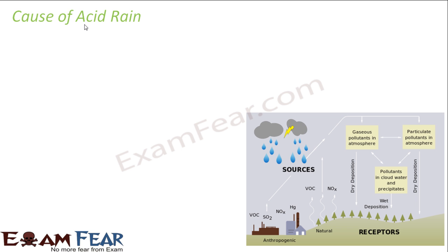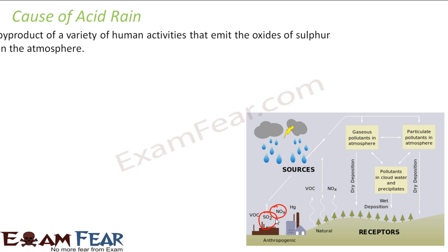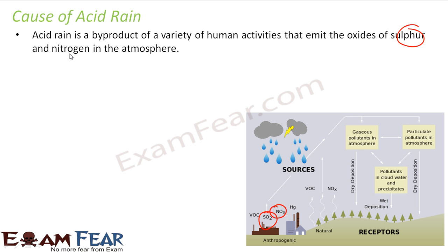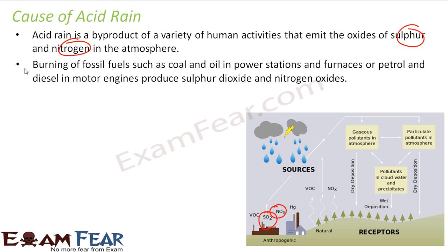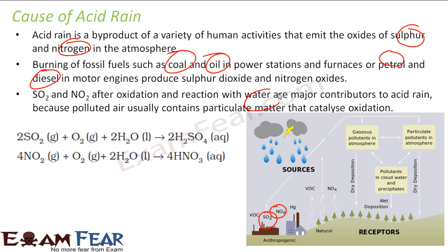So the major causes are sulfur and nitrogen oxides — oxides of sulfur and nitrogen are the major cause of acid rain, mostly by-products of various human activities. These activities include burning of coal, oil, petrol, or diesel, because these produce sulfur dioxide and nitrogen dioxide. When these react with water, they contribute to acid formation. For example: SO₂ + O₂ + H₂O gives H₂SO₄.